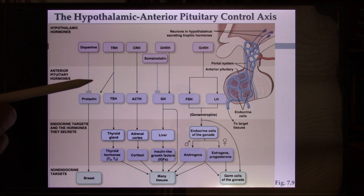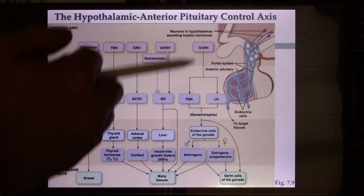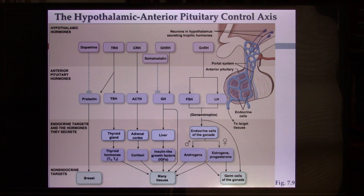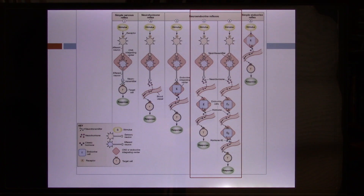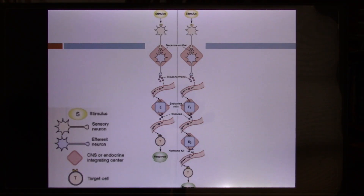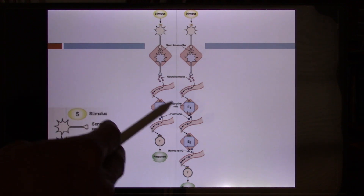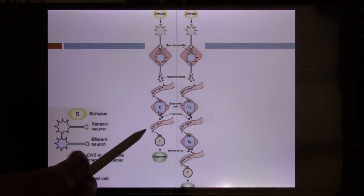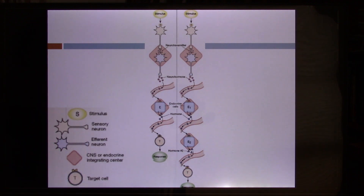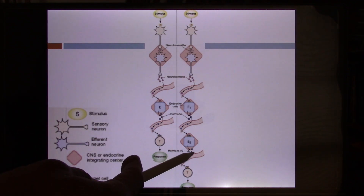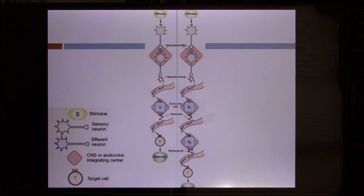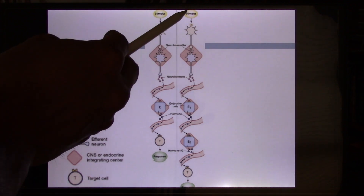The pathway in the anterior pituitary gland can be complicated. For prolactin release, there are two integrating centers: the hypothalamus as the first, and the anterior pituitary gland as the second. For the stress hormone pathway, there are three integrating centers. Using the stress hormone pathway as an example: you see a bear coming — that's the visual stimulus. This stimulus goes to your sensory neuron, your eye sends a signal to your brain, which is the first integrating center.